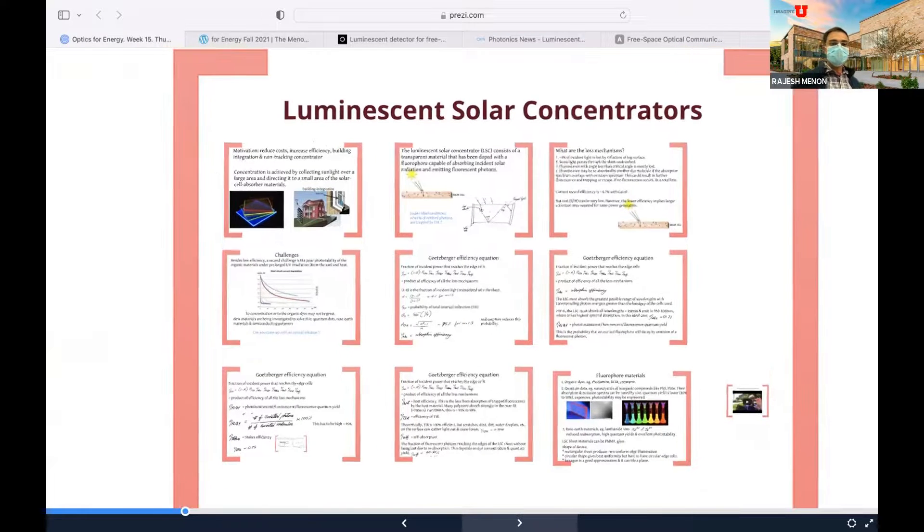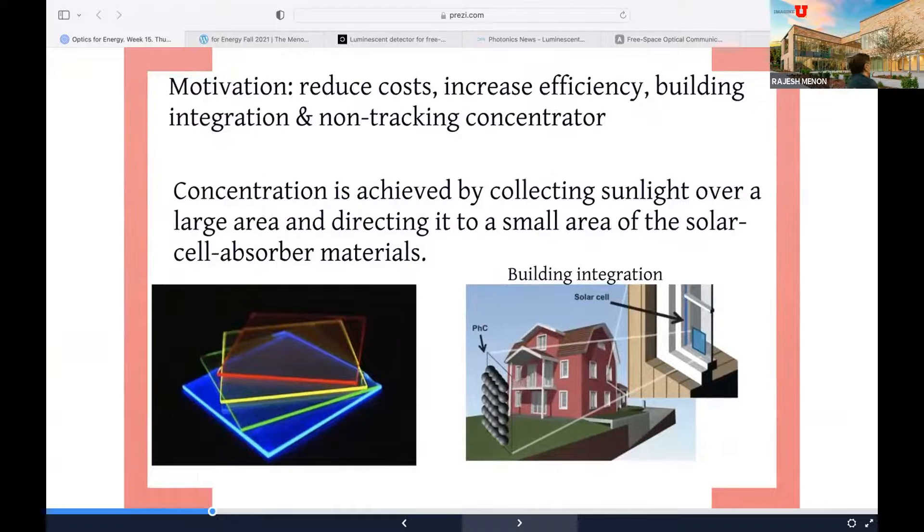It's a really cool idea and you should be aware of it because it's a type of concentrator that doesn't require this kind of optical design. It has many other uses as well. So first of all, why are we talking about this? The main reason is it reduces cost, it's a very cheap way to do concentration. It can potentially increase efficiency, although that is a big challenge nowadays. It can be integrated with buildings because it has the same form factor as a window and it's not tracking, as I said in the very beginning.